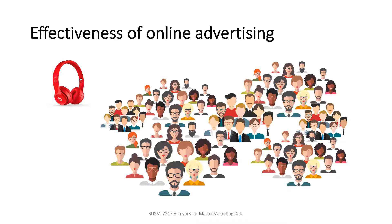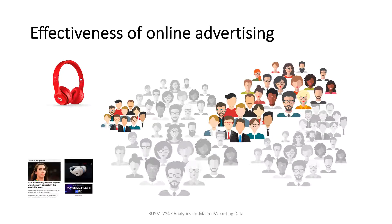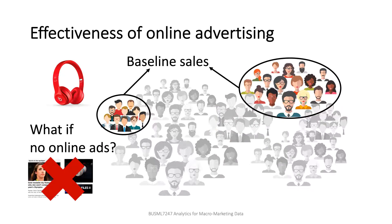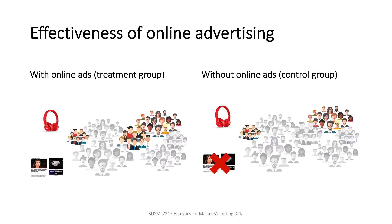So how do we measure the effectiveness of online advertising? To do so, we first need to clarify what we are observing in real life. In reality, we observe how many people bought the device given online advertising. Then, if we can measure what would happen without online advertising, we are able to compute the difference in sales and conclude that the extra sales come from the online advertising. This strategy can be valid especially in the online context.